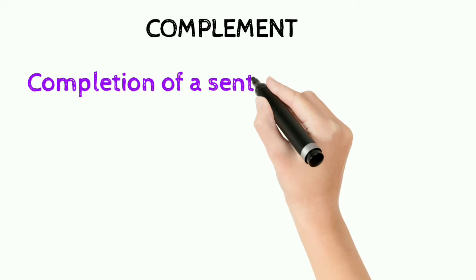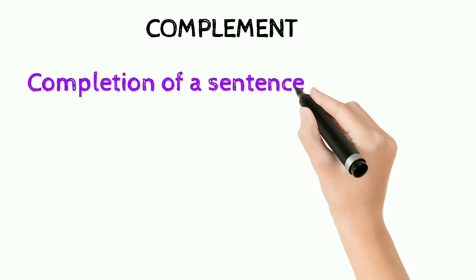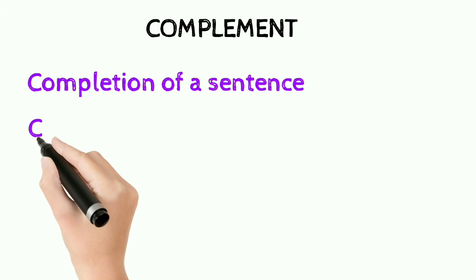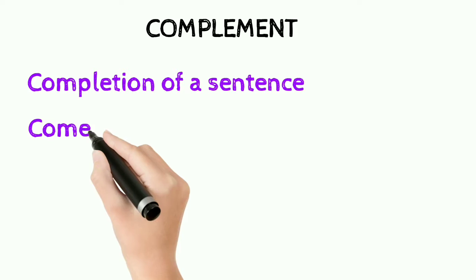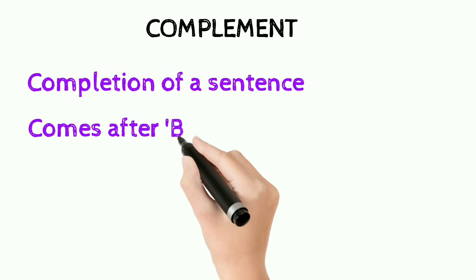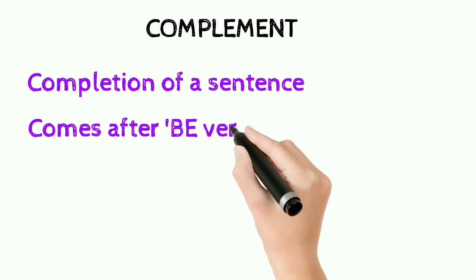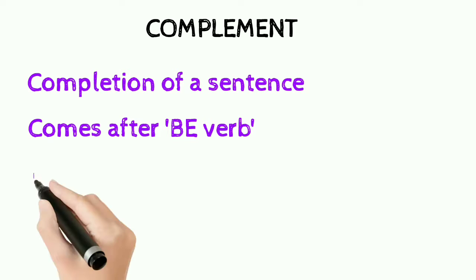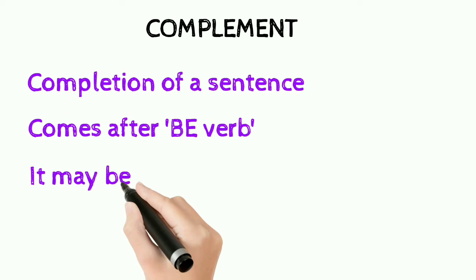Next is complement. Complement is used for the completion of a sentence, and most probably it comes after a 'be' form verb — as we know: am, is, are, was, were. Using these, we can very easily find the complement.